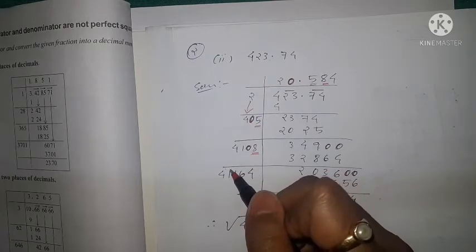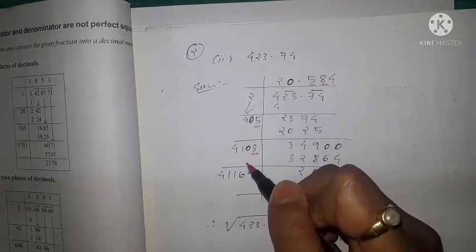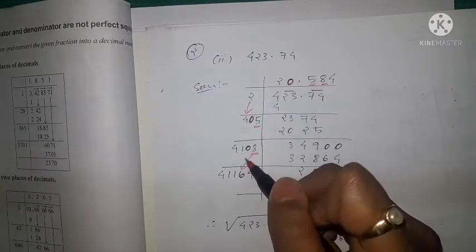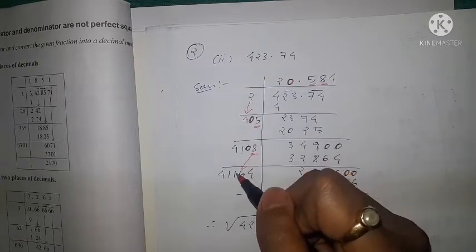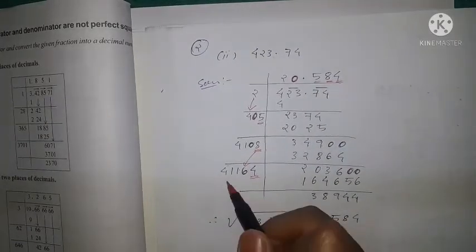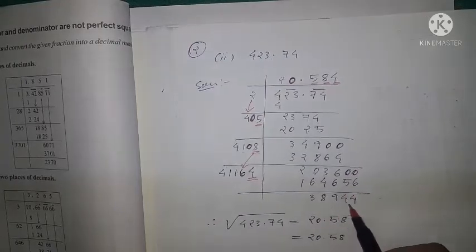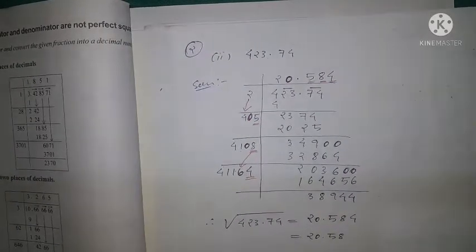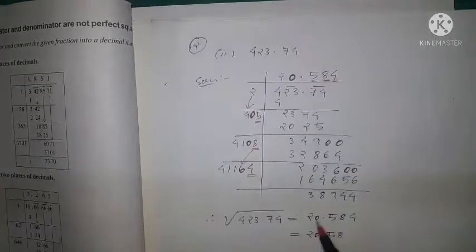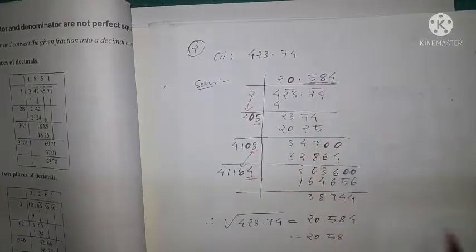Again two zeros come down. The 4 comes as it is, the 1 comes as it is, and this 8 is doubled to 16 — write 6 and carry 1, so 1 + 0 = 1, giving divisor 41164. So 41164 × 4 = 164656. Therefore the square root of 423.74 is 20.584, continuing up to three decimal places.